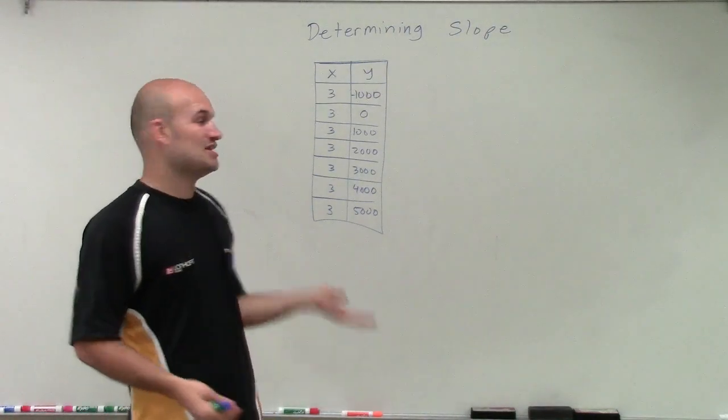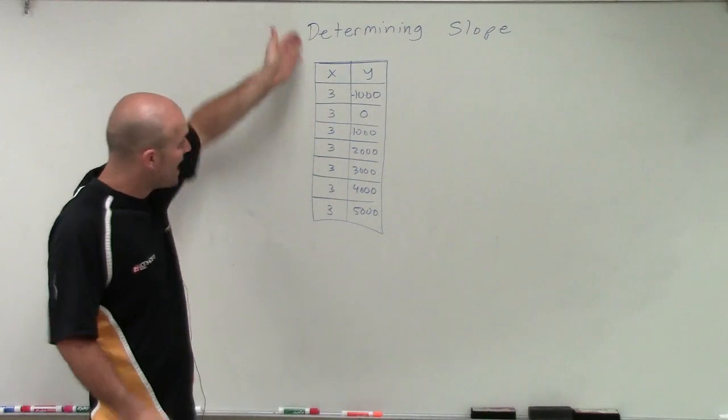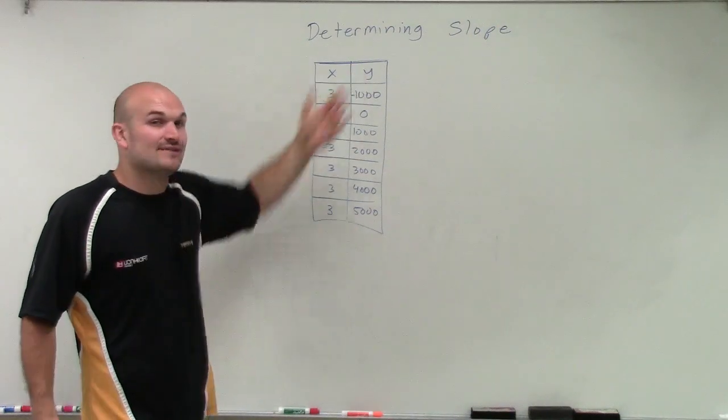But now you can see that my x-coordinates are not changing. My x-coordinates are remaining the same. Every single x-coordinate is always three, but then they have different y-coordinates.